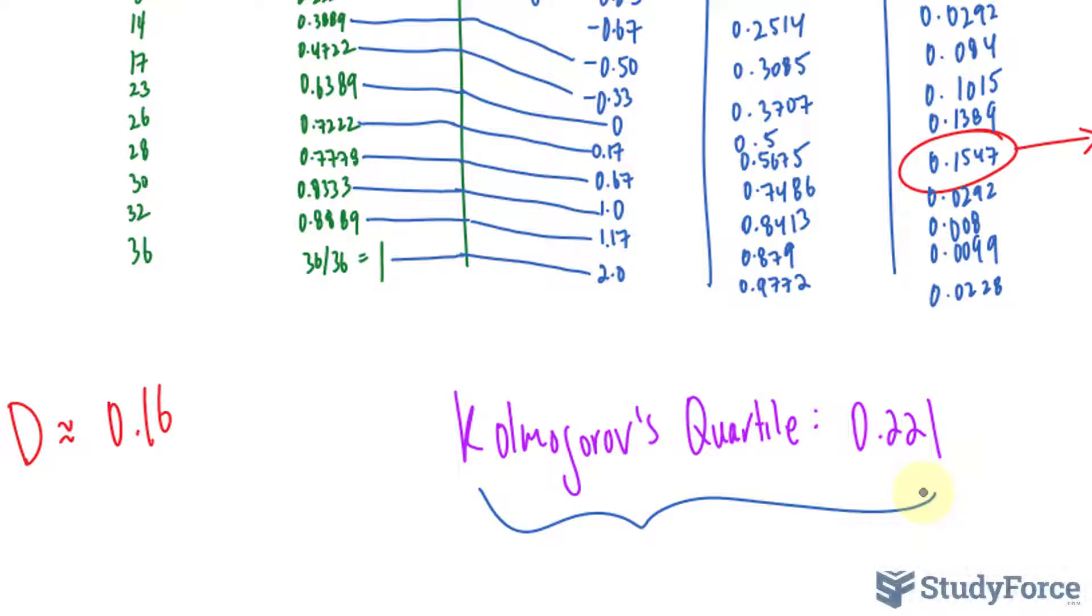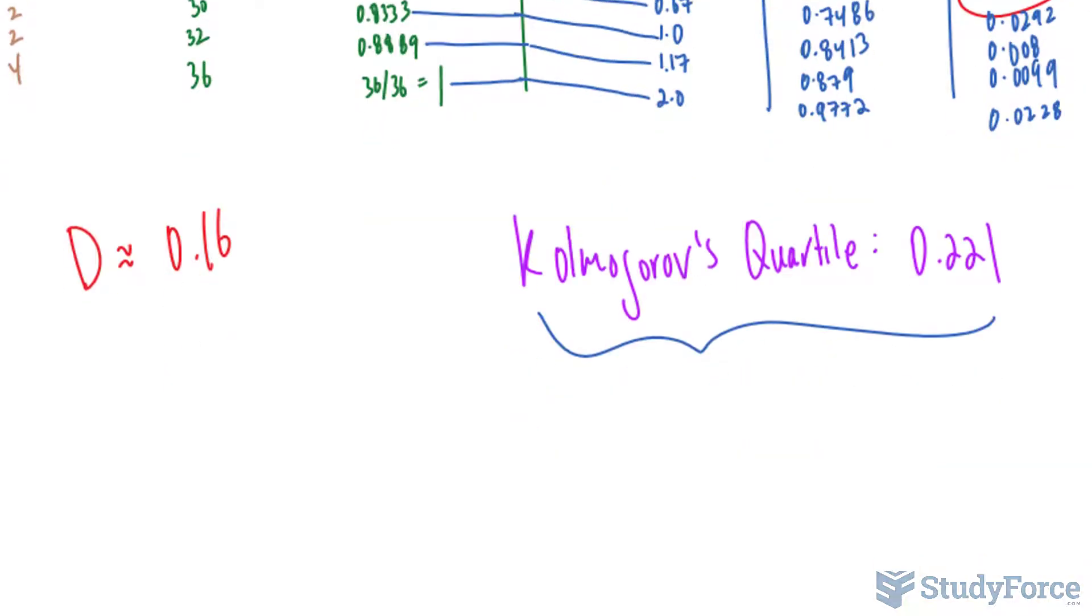And since this is a two-sided test, given our alternative hypothesis of being not equal to, what I will do with the value of D is multiply it by 2. And when I multiply the value of D by 2, I end up with my p-value, or the probability value. So I'll take 0.16, multiply it by 2, and this represents my value for p. That's equal to 0.32. We'll be comparing this value to the quartile that we found, 0.221. And as you can tell, 0.32 is greater than 0.221.